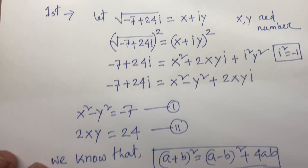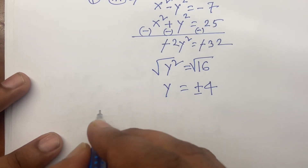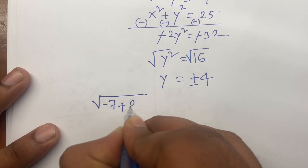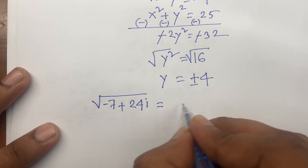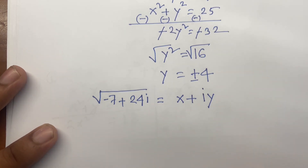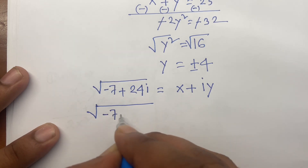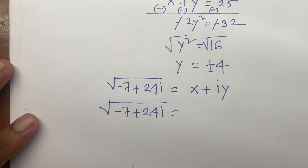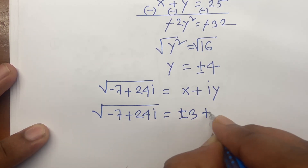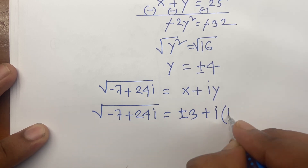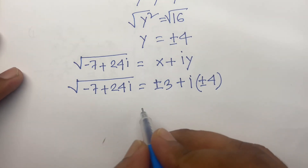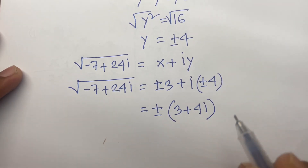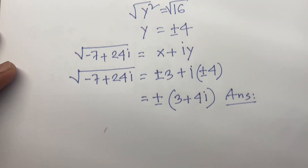Recalling that we let square root of minus 7 plus 24i equal x plus iy, and taking plus or minus as common, the answer is: square root of (−7 + 24i) equals plus or minus (3 + 4i).